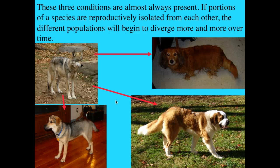Indeed, these three conditions are almost always present. And if they are, and if some individuals within the population are geographically isolated and no longer able to reproduce with the rest of the population, the changes that they have in their subpopulation are going to be different from the changes in the rest of the population — and that's how divergence begins and how new species can form.